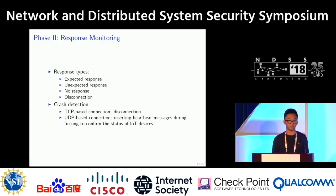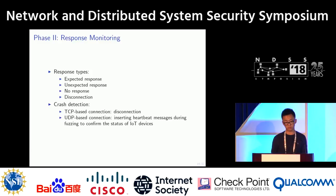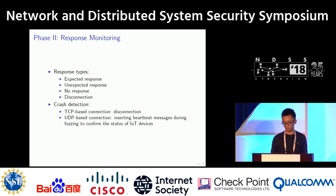We found it's hard to identify whether a crash has been triggered based on response types alone. Therefore, we detect crashes based on two rules. The first rule is: for TCP-based connections, if there is a disconnection, we consider a crash has been triggered. For UDP-based connections, we insert a heartbeat message every several seconds during fuzzing to confirm the status of the device.